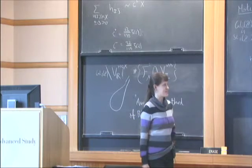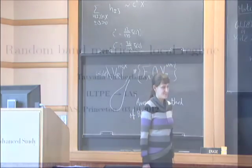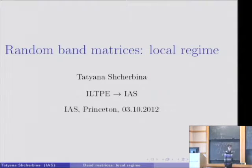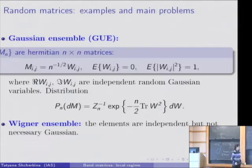I'll speak about random matrix theory. What is a random matrix? Of course, it is a matrix with random elements. It can be without any symmetry, it can be Hermitian, real symmetric, orthogonal, unitary, and so on. But here we consider only the Hermitian case. So all matrices that I will speak about are Hermitian.